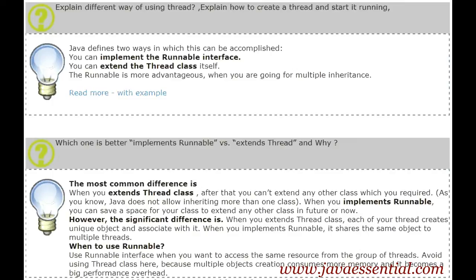The first difference is that while extending the Thread class, we can't extend any other class because Java doesn't support multiple inheritance. But when we use the Runnable interface, we can still extend another class, so we save space for our class to extend any other class.